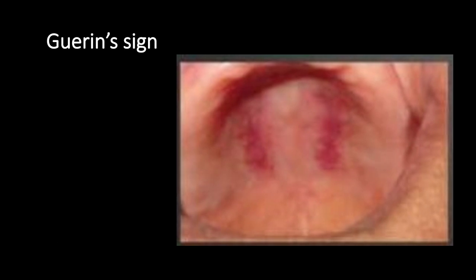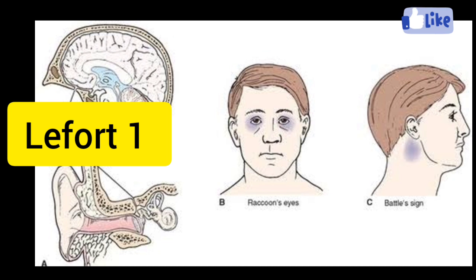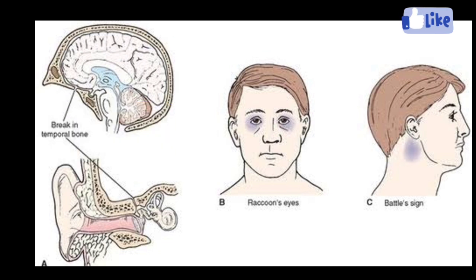Guérin's sign: it is seen in Le Fort 1 fracture. Remember, Le Fort 1 fractures are also known as Guérin's fracture. Guérin's sign is seen in Le Fort 1 fractures, and ecchymosis is seen near the greater palatal foramina.